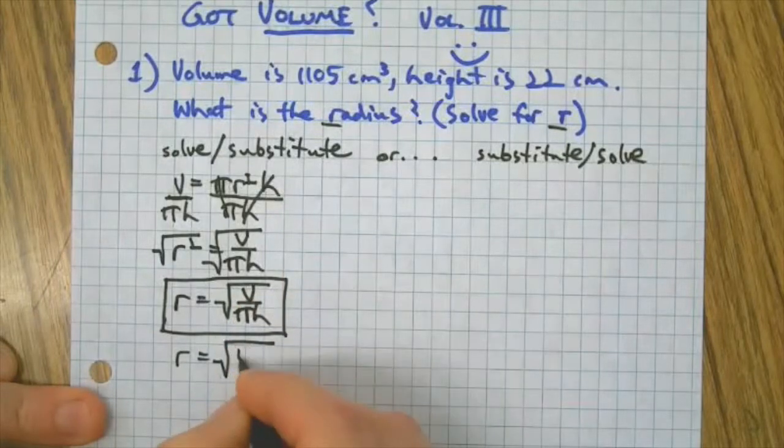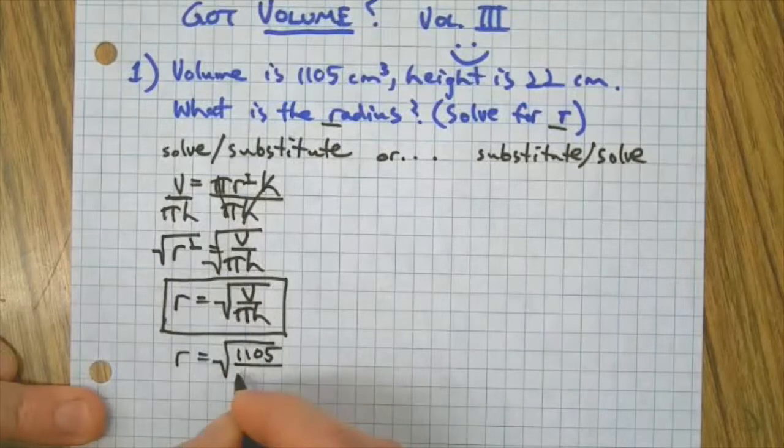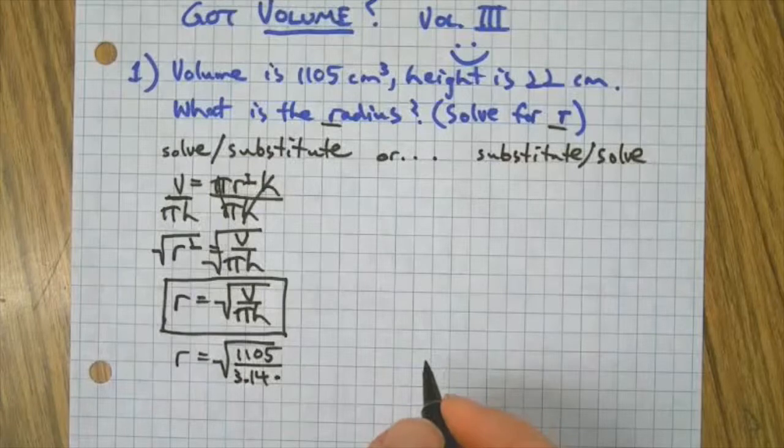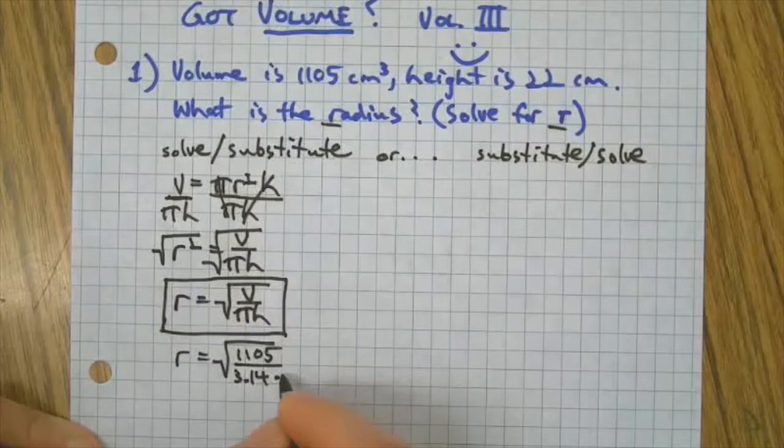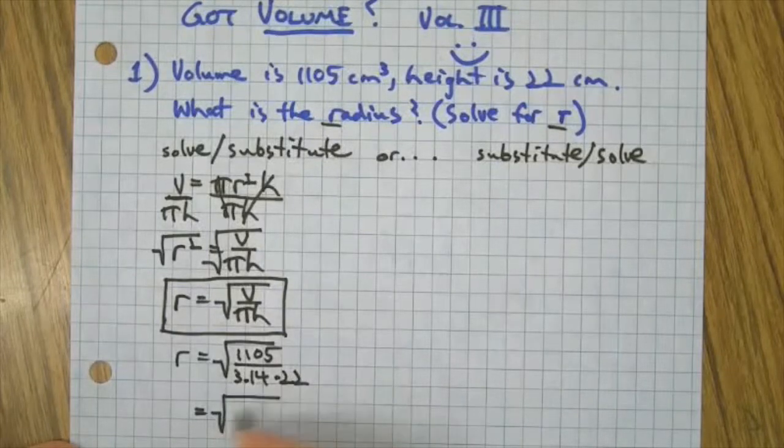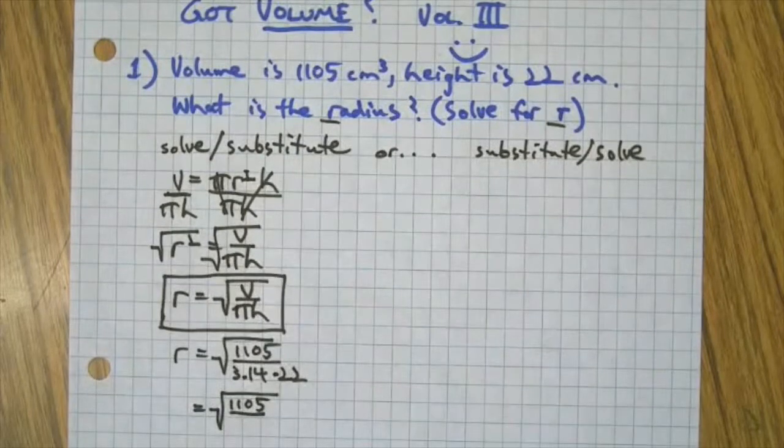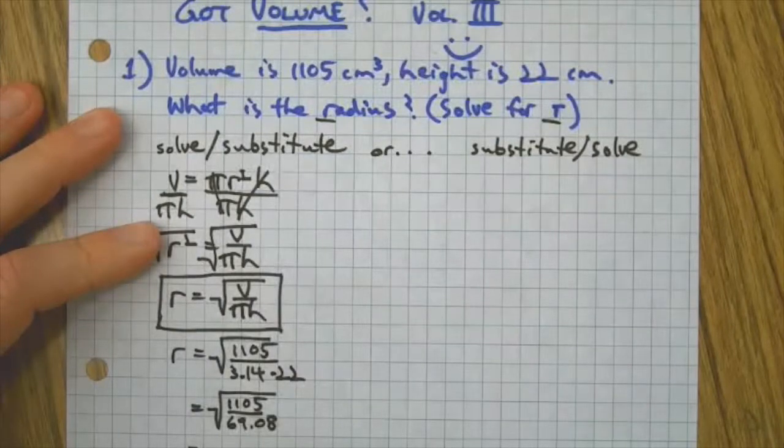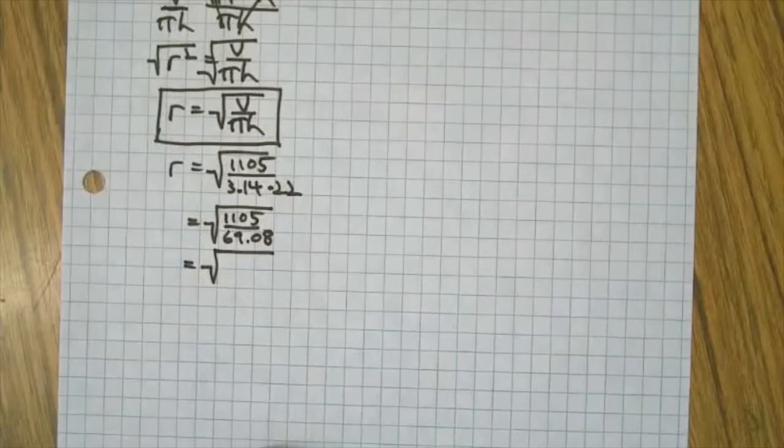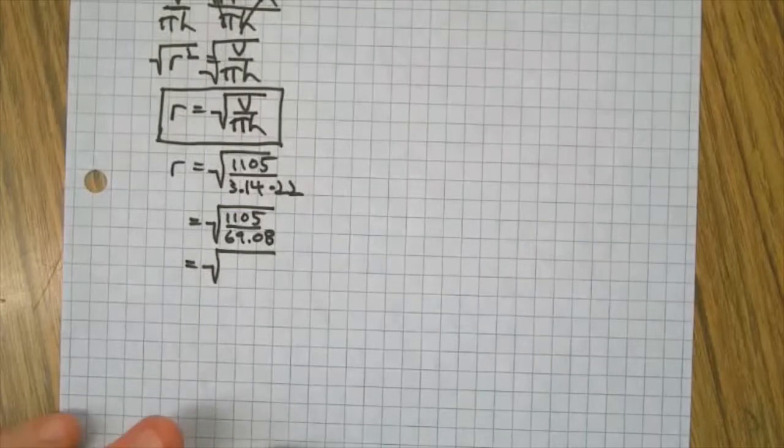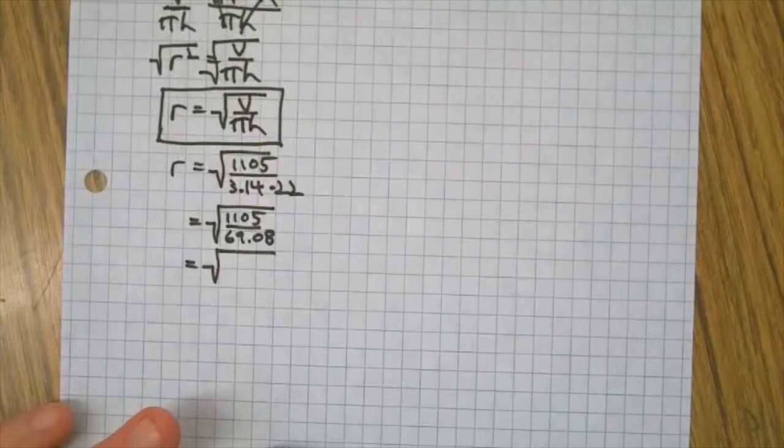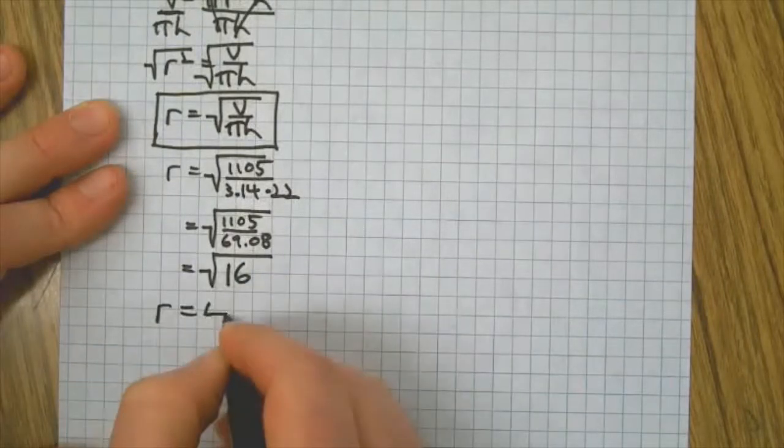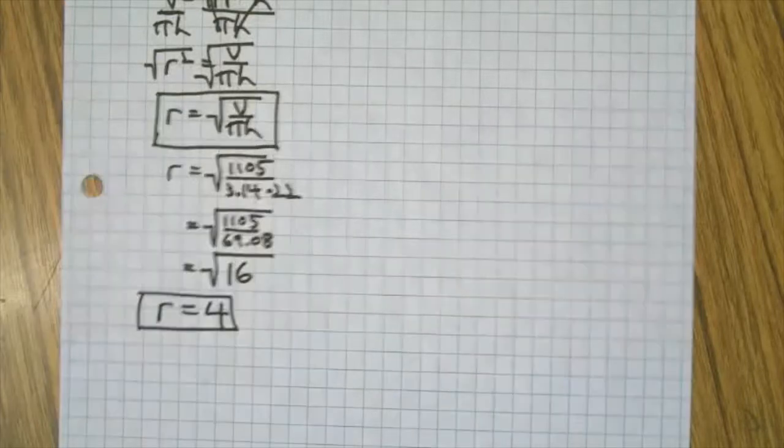Showing all the steps for your benefit but also for mine—it's a good way to catch a mistake. Common estimate for pi: 3.14. Our height was 22. I'm going to use my calculator now. We're going to divide what's inside the root symbol: 105 divided by 3.14 times 22 equals about 15.99. I'm going to round that off to 16, and then we can see that the radius is 4.